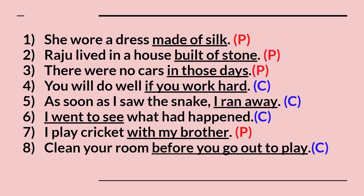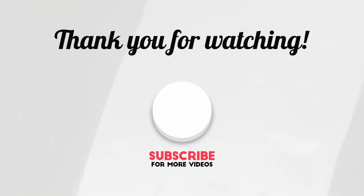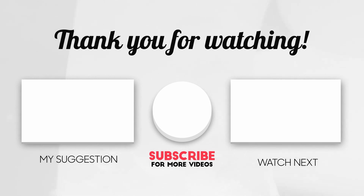Let's check the answers. 1. 'She wore a dress made of silk' — phrase. 2. 'Rajoo lived in a house built of stone' — phrase. 3. 'There were no cars in those days' — phrase. 4. 'You will do well if you work hard' — clause. 5. 'As soon as I saw the snake I ran away' — clause. 6. 'I went to see what had happened' — clause. 7. 'I play cricket with my brother' — phrase. 8. 'Clean your room before you go out to play' — clause. I hope you enjoyed this lesson. Happy learning, and I'll see you in another lesson. Bye for now!